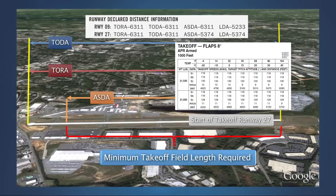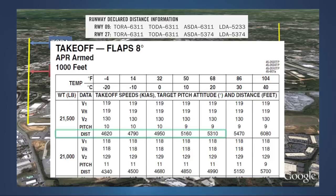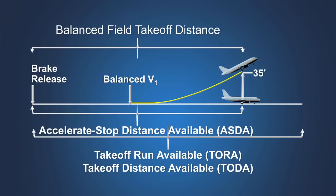The takeoff data furnished for most business jets provides a minimum takeoff field length required based on takeoff weight, takeoff configuration, and environmental conditions. When the manufacturer provides takeoff performance data that shows only one minimum runway length, this length must not exceed the most restrictive of the takeoff declared distances of accelerate stop distance available, takeoff run available, or takeoff distance available.